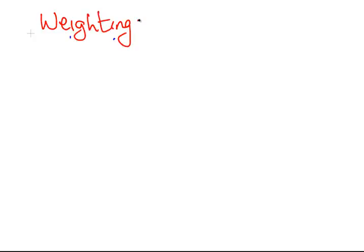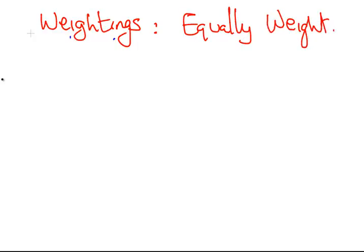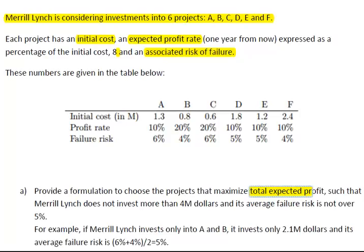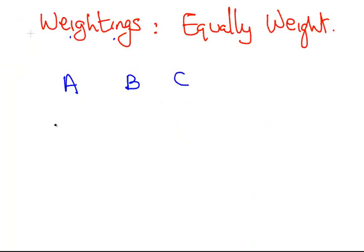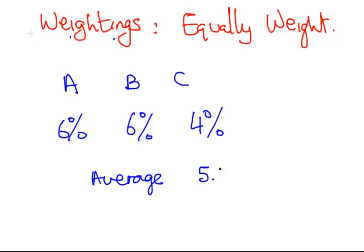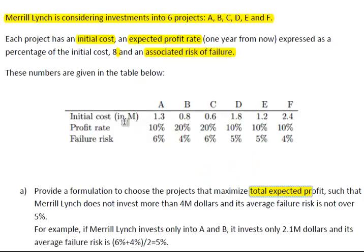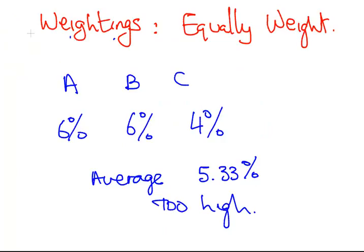Weightings: equally weighted. Let's say just A, B, C. The 6%, 4%, and 4%, the average there would be 5.33%. Too high. That would be an invalid combination, A, B, C. Whereas if we had A, B, and E, 6%, 4%, 5%, that's 5% average. So we're going to figure out a way of expressing this as a constraint. This is actually a little bit tricky.